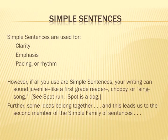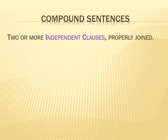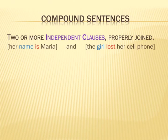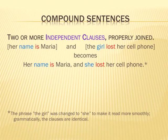Some ideas belong together, and this leads us to the second member of the simple family: compound sentences. A compound sentence is defined as two or more independent clauses properly joined. 'Her name is Maria' is an independent clause; 'the girl lost her cell phone' is an independent clause. Joined together: 'Her name is Maria, and she lost her cell phone.' Note that 'the girl' was changed to 'she' to make it read more smoothly, but grammatically the clauses are identical.